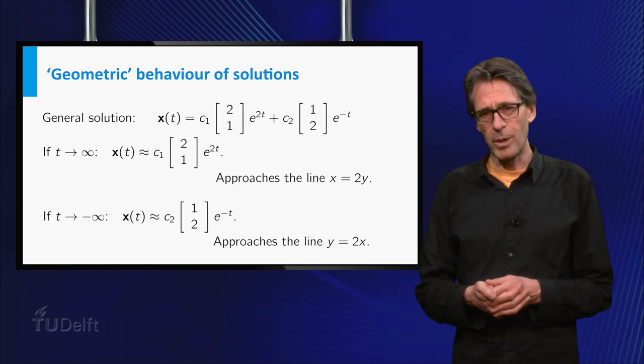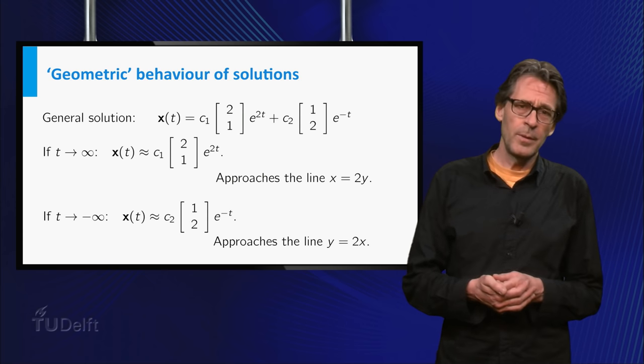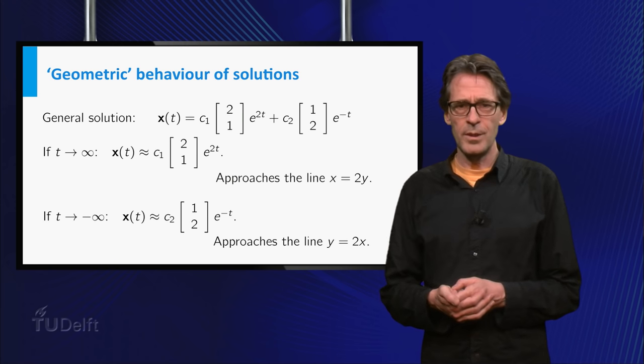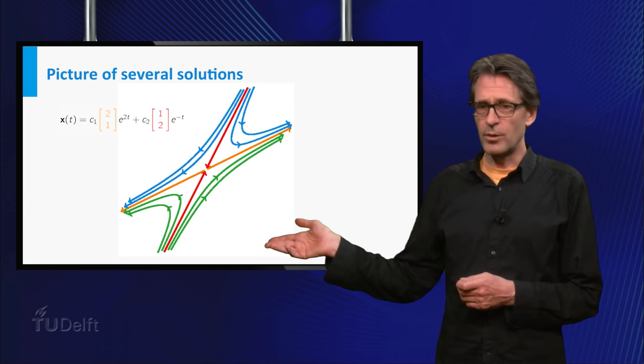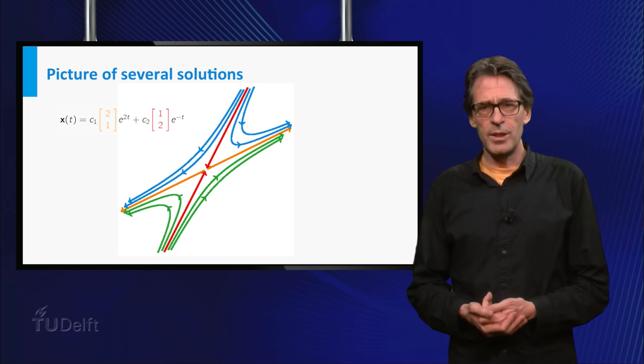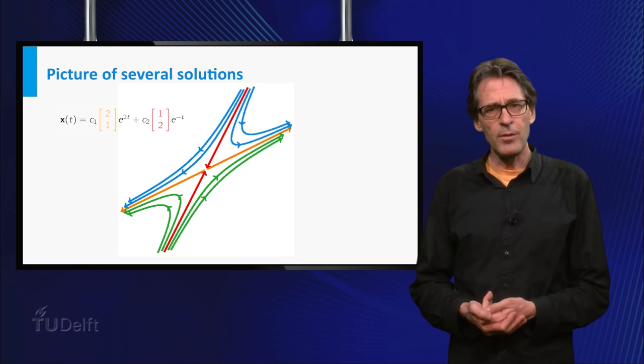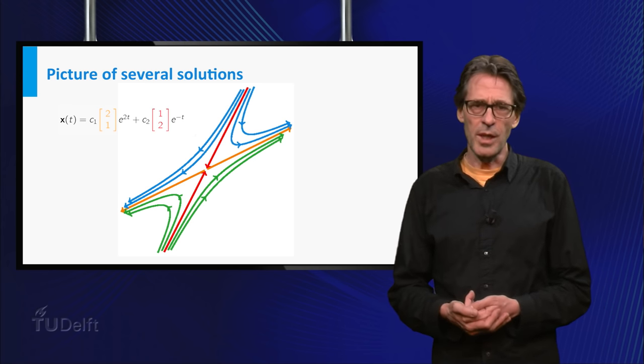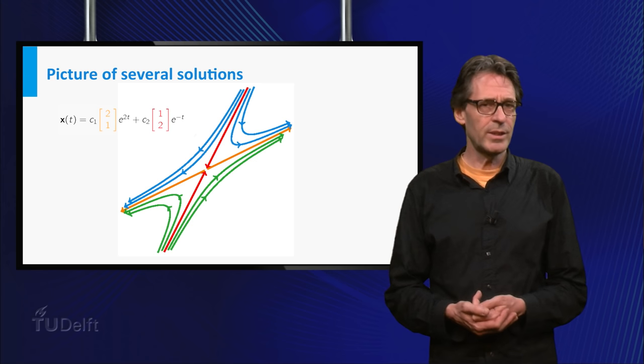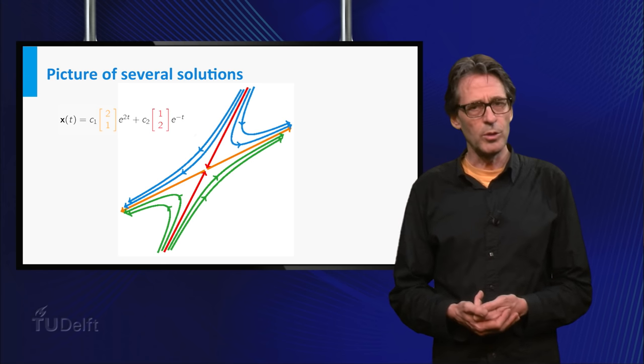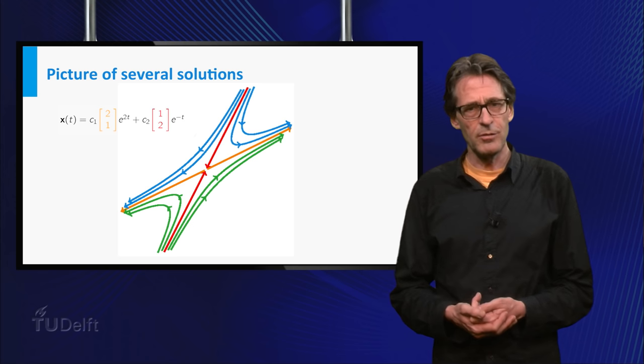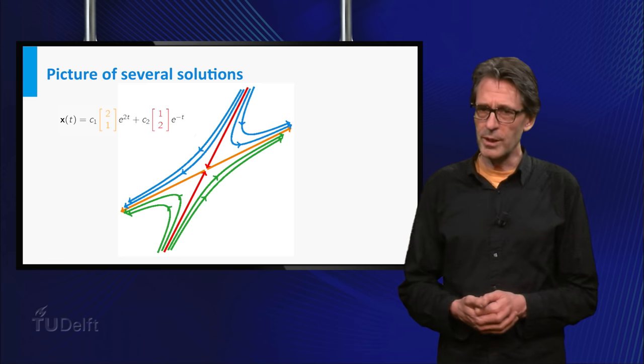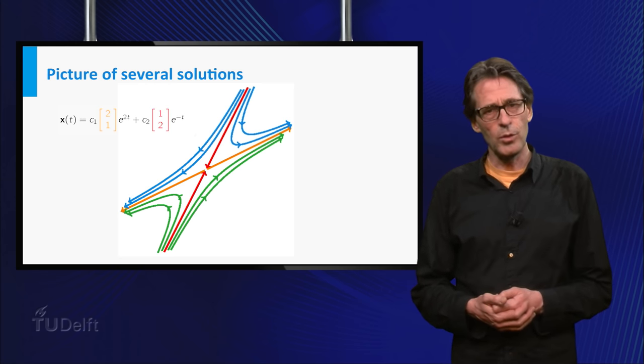Likewise, if t goes to minus infinity, which is like going back in time, the line in the direction of the other eigenvector is an asymptote. The picture shows the general behavior. The origin is in the center. If either of the constants equals zero, we get solutions that stay on one of the lines of the eigenvectors. Especially there are two exceptional solutions that approach the origin over the line corresponding to the negative eigenvalue. These are the red ones. For solutions showing this behavior, the origin is called a saddle point.